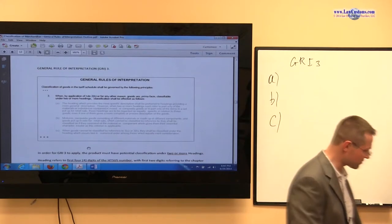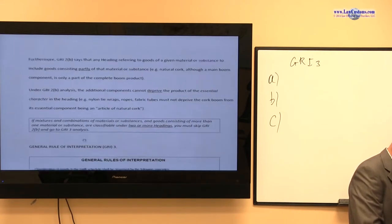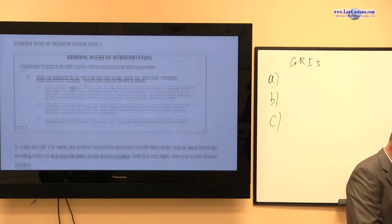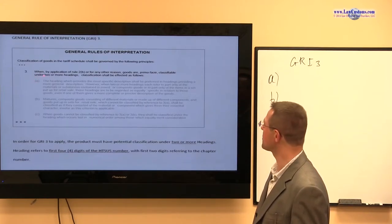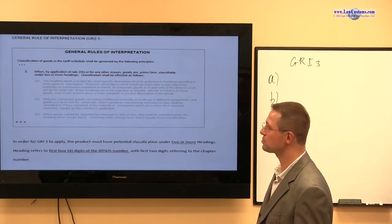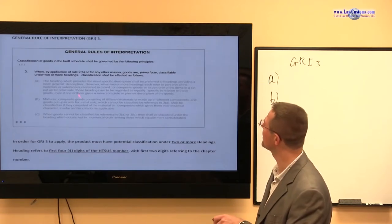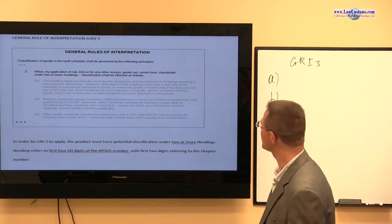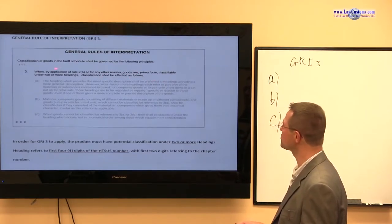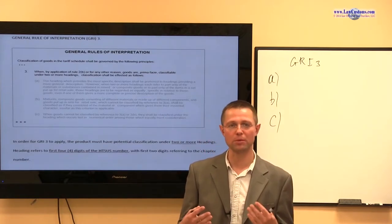The introductory text of GRI-3 essentially says the following — here is a snippet. GRI-3 says: when 2B requires you to resolve a classification issue, the goods must be classifiable under two or more headings. Remember that 2B says you must go to 3 if the item is classifiable in two or more headings. So there must be the possibility of two or more numbers being applicable.